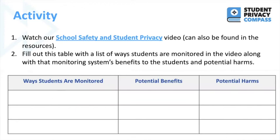Now we would like you to complete this activity. Watch our school safety and student privacy video linked here, which can also be found in our resources. As you watch the video, fill out the provided table with the list of ways the video shows students are being monitored, along with that monitoring system's benefits to students and potential harms. We have provided a guide key for how we have thought about this activity in the resources.